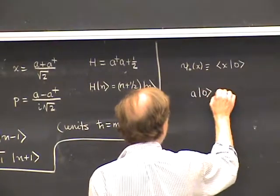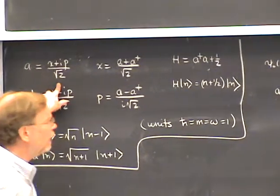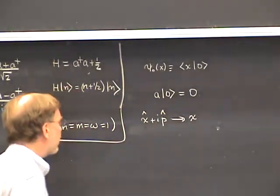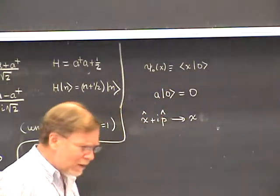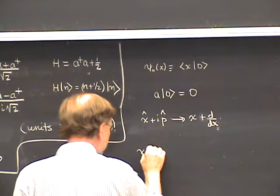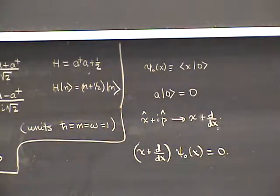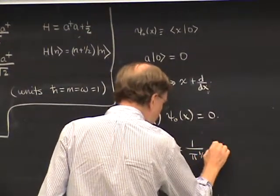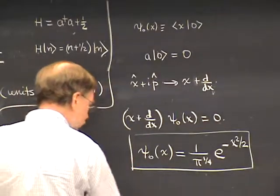This follows easily from the fact that the annihilation operator acting on the ground state gives zero. The annihilation operator is X plus IP over square root of 2. In wave function language, X goes into multiplication by X, and P goes into minus i d/dX. So as an operator acting on the wave function, this goes into X plus d/dX. Therefore the ground state wave function satisfies the differential equation: (X + d/dX) psi-zero of X = 0.